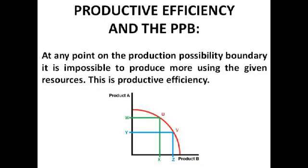Productive efficiency also occurs at any point on the production possibility boundary, because the whole country or firm is using all of its resources to the maximum extent it can. It could change what it puts them into, but it can't do any more with them — it's using them all to their total level. It's almost impossible to actually reach this level because of unemployment and such, but if it were on the production possibility boundary, there would be productive efficiency.